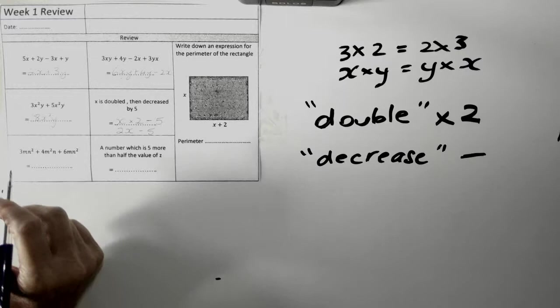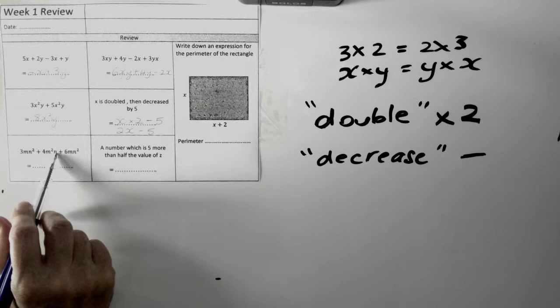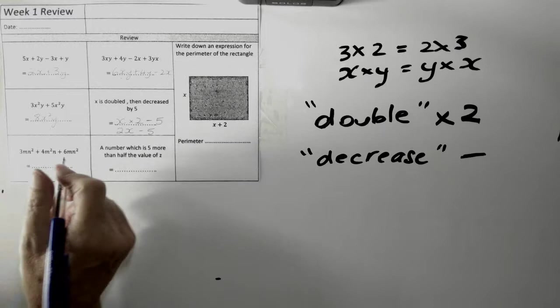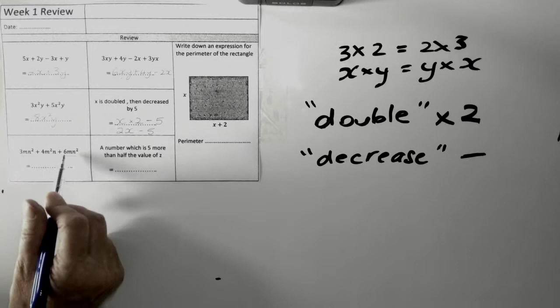The next one. Let's have a look. We've got MN squared. M squared N. Not the same. MN squared. So, I'm looking at that one there, this one here, and this one here. They're the same. They're the same terms.